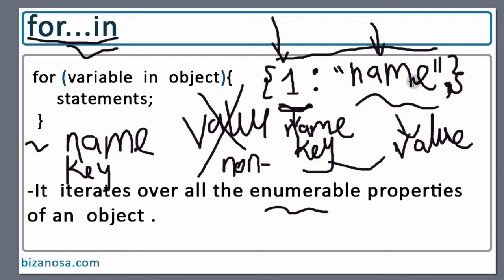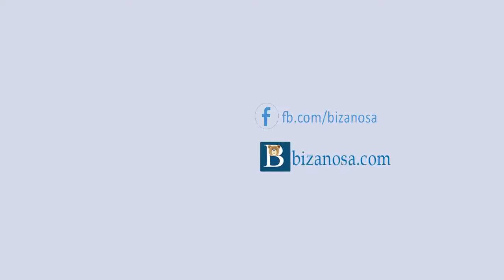So basically, in the next video, that's what we're going to do - an example of a for...in loop. In this video, we have said that a for...in loop is used to iterate over enumerable properties of an object, and if you use the for...in loop, it brings back the name and not the value. So in the next video, let's look at an example to see exactly what we mean by this.